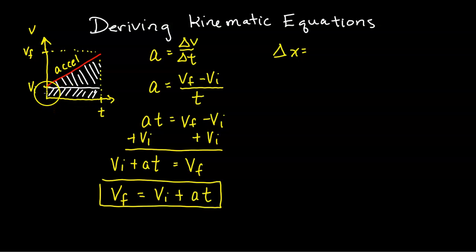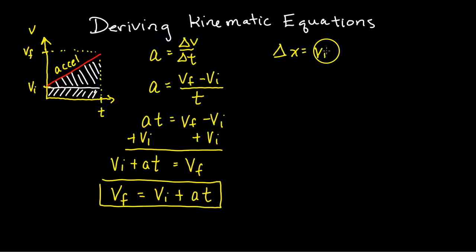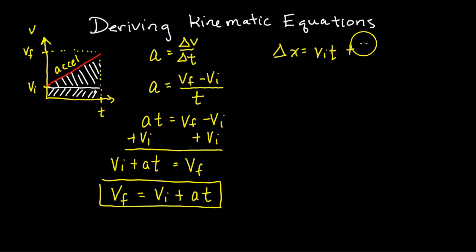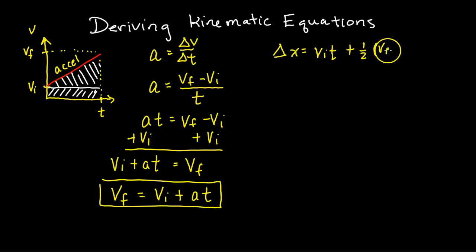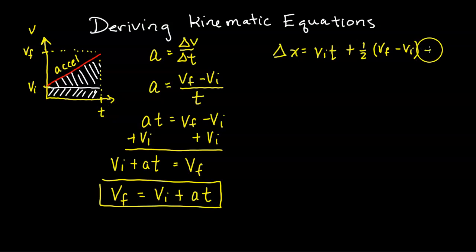The area under the curve consists of a triangle and a rectangle. The area of the rectangle is base times height, which gives us v_i times t. Then we have a triangle whose area is one-half base times height, where the height is v_final minus v_initial and the base is t.